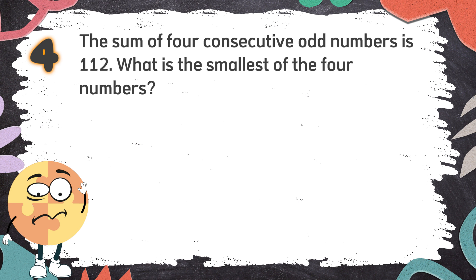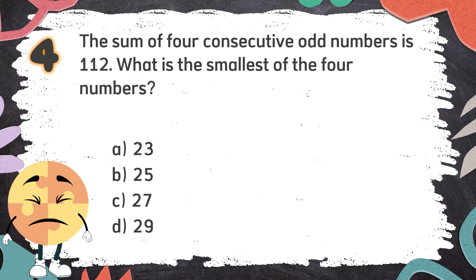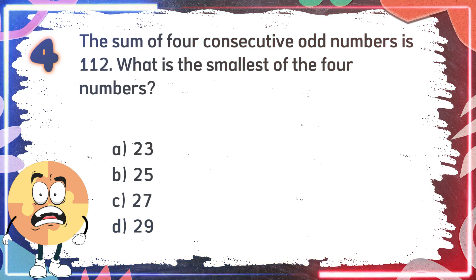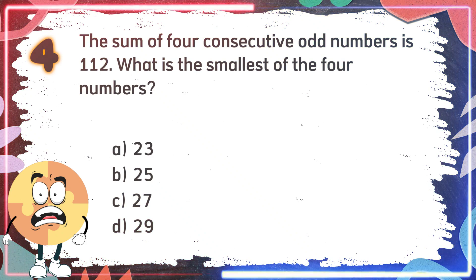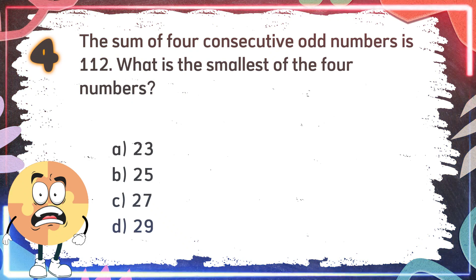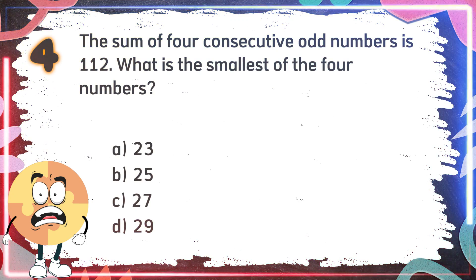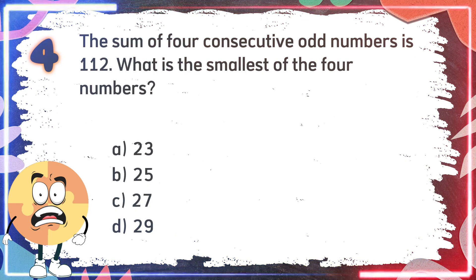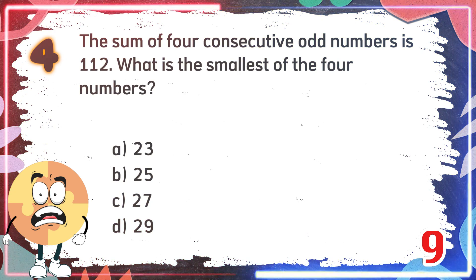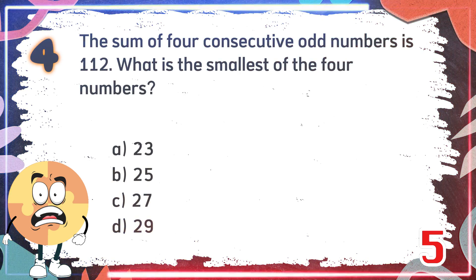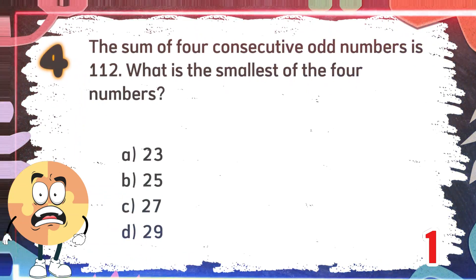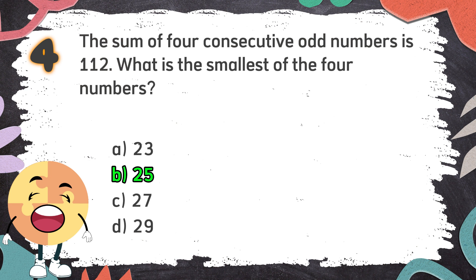Number 4: The sum of 4 consecutive odd numbers is 112. What is the smallest of the 4 numbers? The choices are: A. 23, B. 25, C. 27, D. 29. The correct answer is B. 25.